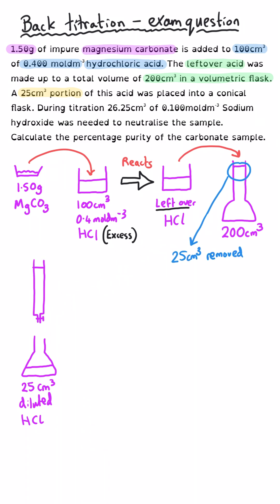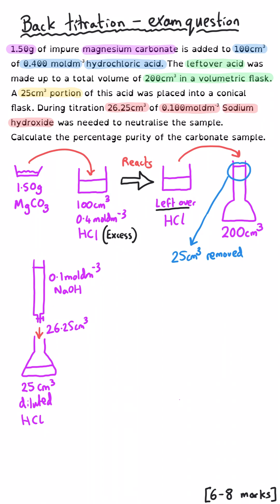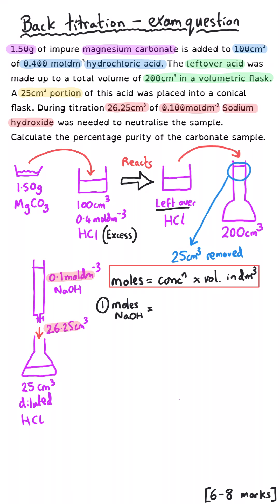A 25 cm³ portion of this acid is taken from the volumetric flask and placed into a conical flask. A titration is carried out, and 26.25 cm³ of 0.1 mol dm⁻³ sodium hydroxide is needed to neutralize the sample. What is the percentage purity of the original sample? This could be worth six, seven, or eight marks, so take it one step at a time. Step one: moles of NaOH = concentration × volume = 0.1 × (26.25/1000) = 2.625 × 10⁻³ moles.